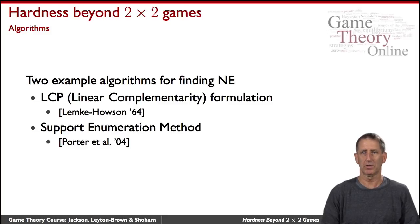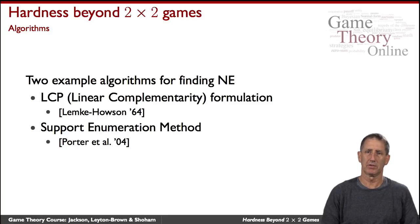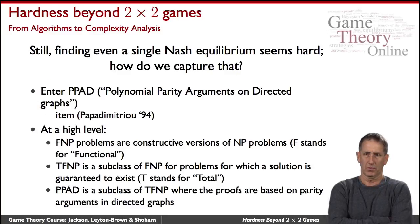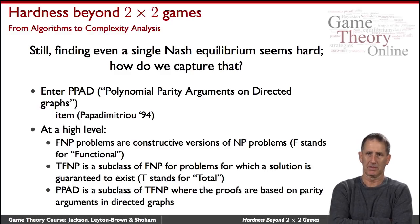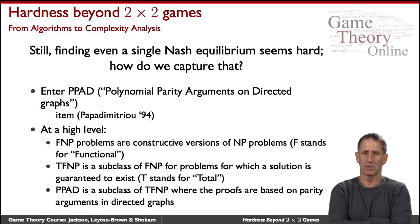There's a clever heuristic for how to enumerate those supports and check them one by one. Although this procedure is not as smart or insightful as Lemke-Howson, it turns out that in practice it tends to run very fast. People have tried very hard to find algorithms for computing a sample Nash equilibrium, and it does seem hard. The question is: can we somehow capture that formally within the complexity hierarchy?